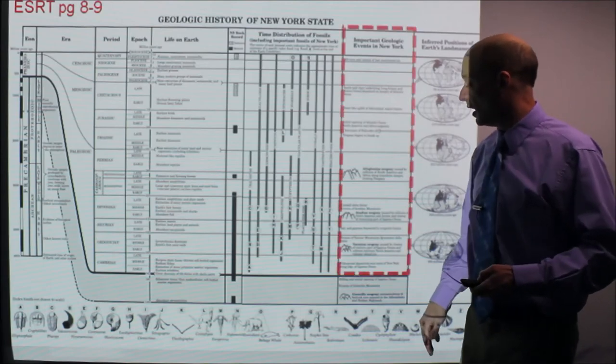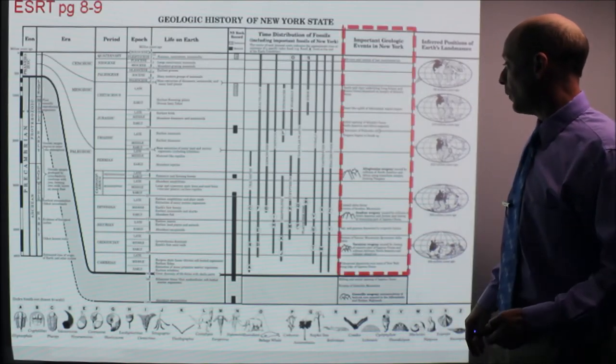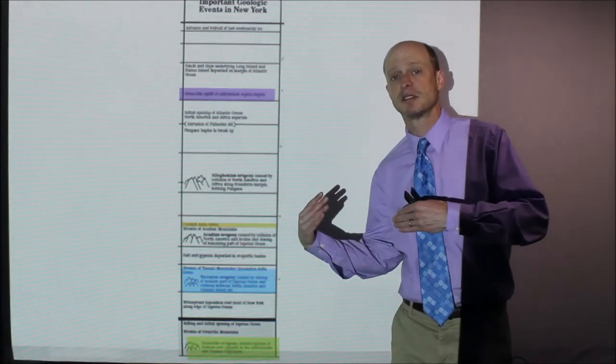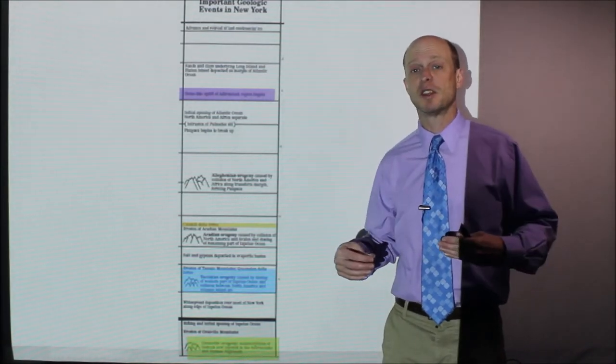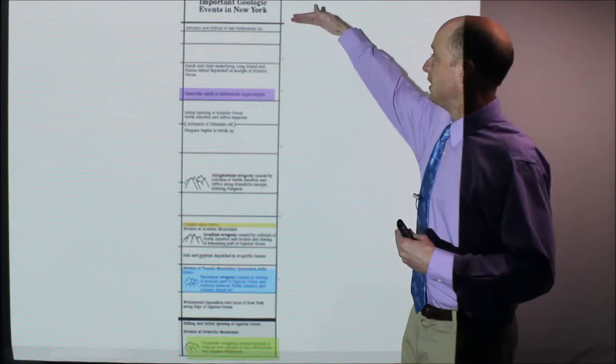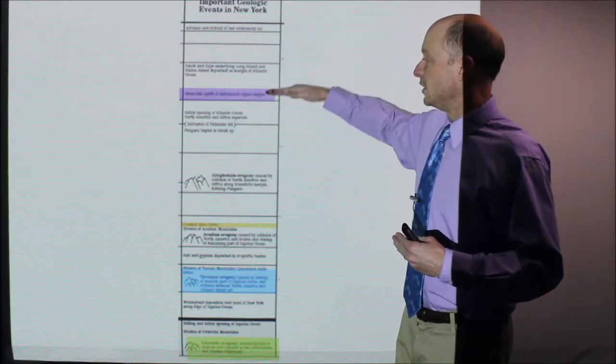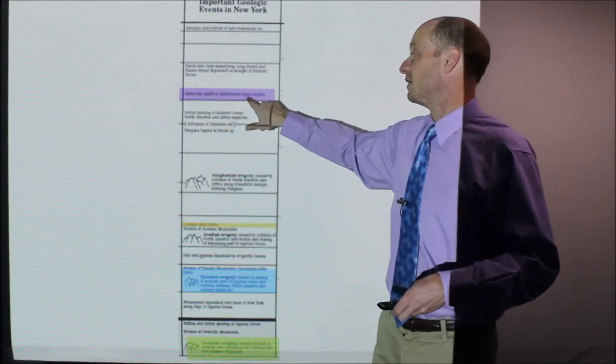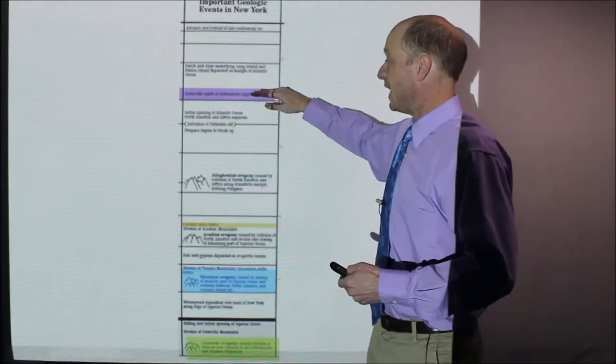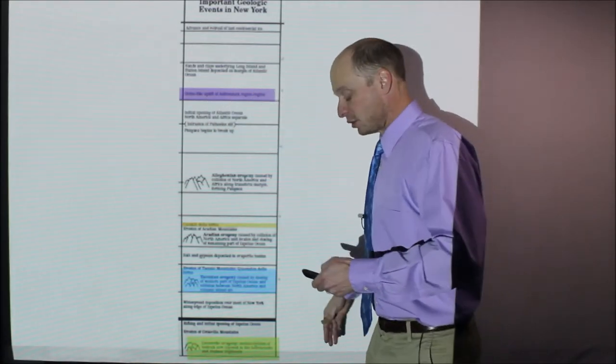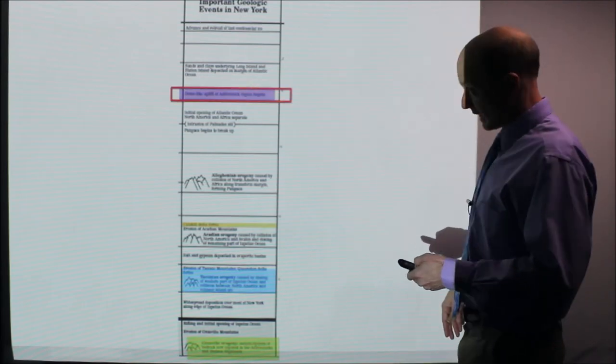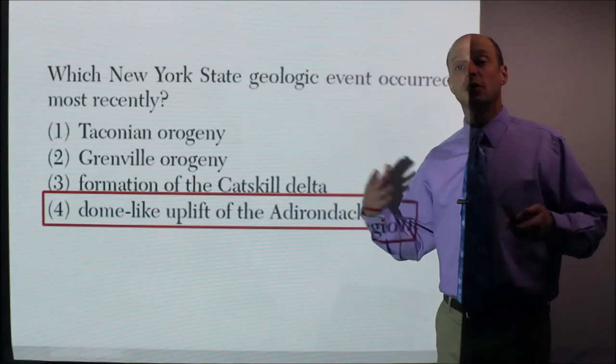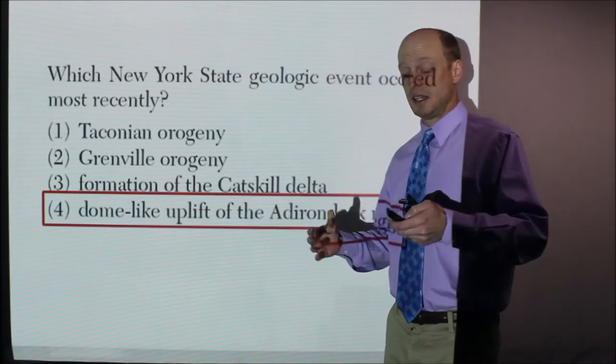I took those choices and highlighted them with color. It's really hard to see because they're so small. If this is today, the most recent one is this one, which says dome-like uplift of the Adirondack region begins. That's the most recent one of those four choices I've highlighted right there. Therefore, the answer is choice four. Knowing that that's on there and where it is is essential.